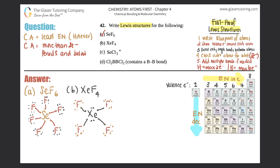Part C: SeCl₃ with a plus charge. A positive charge means you actually lost one electron, and you take that into account after you draw your dots. First, figure out who's in the middle - selenium or chlorine. Selenium is less electronegative, and the increase across the period is more than the drop going down, so selenium would be in the middle surrounded by three chlorines.